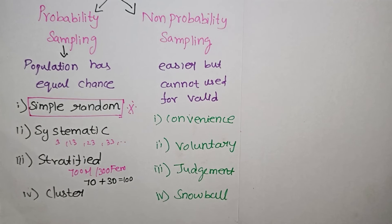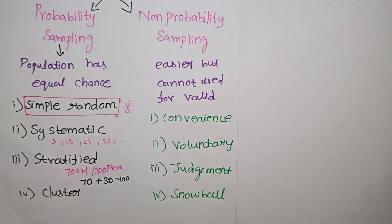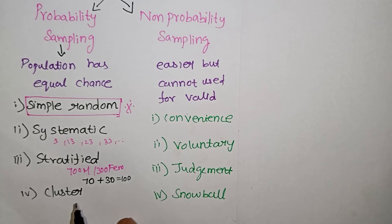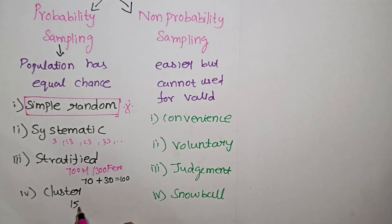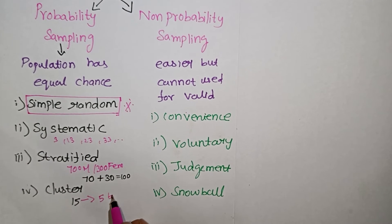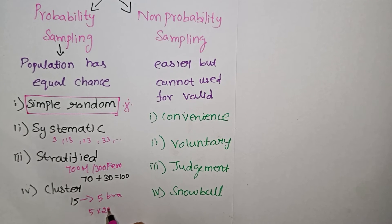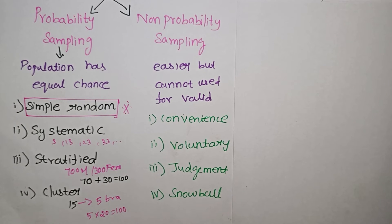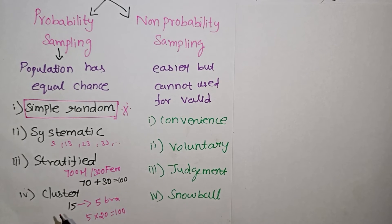In cluster sampling, with 100 employees to analyze across 15 branches, you select clusters — for example, select 5 branches and then take 20 employees from each branch to get your 100 employees. That is cluster probability sampling.